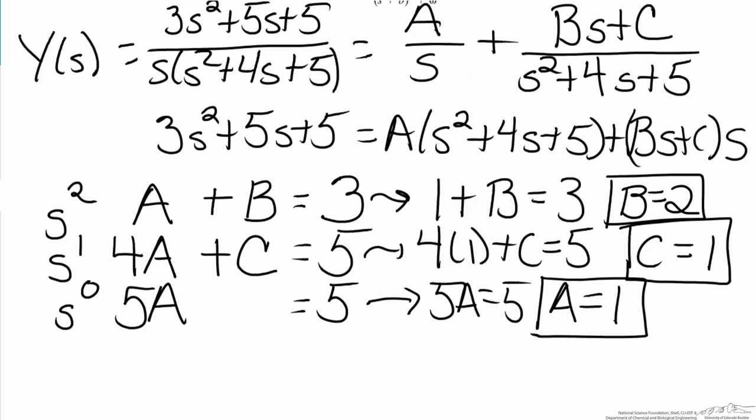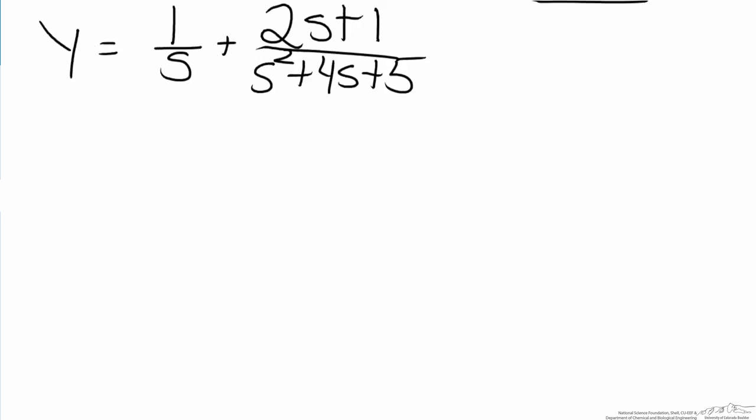Now that we have solved for all of these constants, we can substitute them back into the equation shown above. When that substitution is done, the equation is the one shown here. The inverse Laplace transform for one over s is relatively straightforward, it's just the inverse of a step function, which is just a constant, that's one.